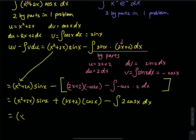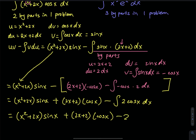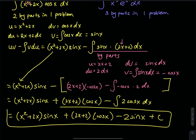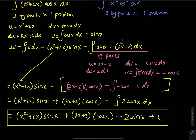Overall, we have x squared plus 2x times sine x, plus 2x plus 2 times cosine x, minus 2 sine x, plus C. That is the answer to the first integral.